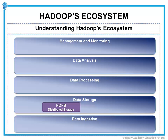For data storage, at the foundation level, we have Hadoop Distributed File System, which is the core component of the Hadoop ecosystem. HDFS is the mechanism by which a large amount of data can be distributed over a cluster of nodes, and data that is written once will be read many times for analytics. It provides the foundation for other tools such as Pig, Hive, and HBase. Also, there is HBase, which is a column-oriented NoSQL database and is typically used for fast read-write access to large amounts of data. It is well suited for sparse datasets which are common in many big data use cases.